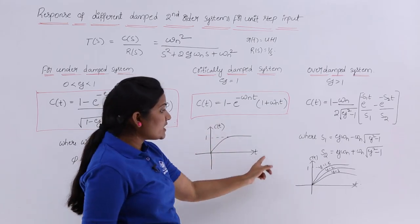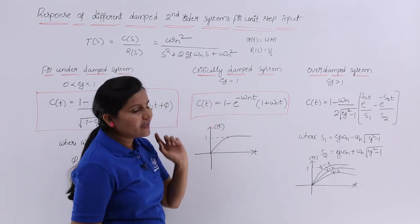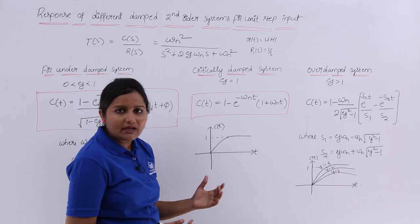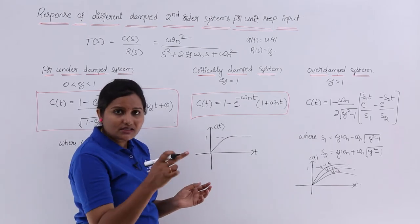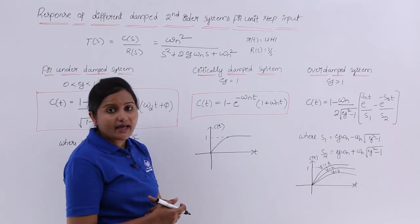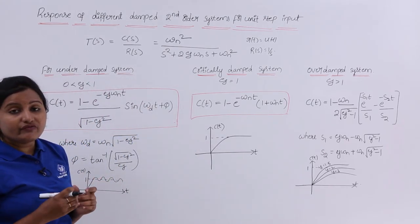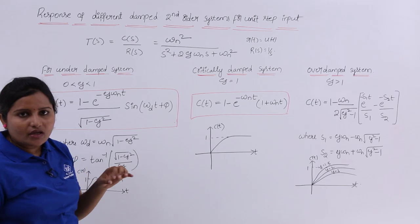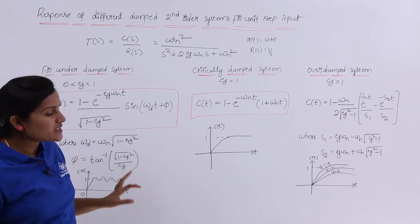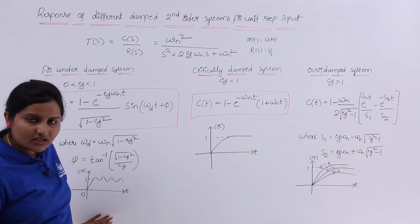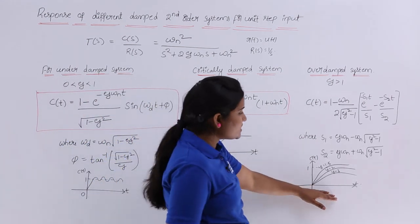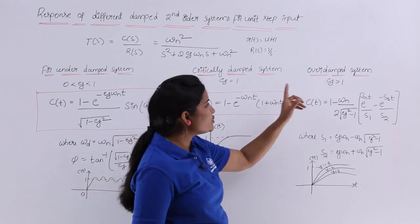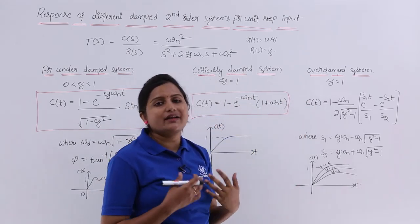The time response of the critically damped second order system will always look like this. I am showing this response structure because sometimes exam questions ask: from the given diagrams, which one is the critically damped response? You need to identify which is the under-damped second order system response — it oscillates — and this is the over-damped second order system response for unit step signal.